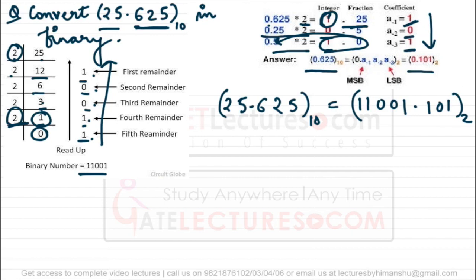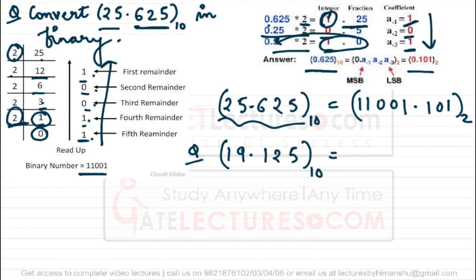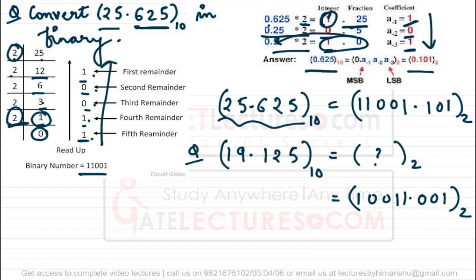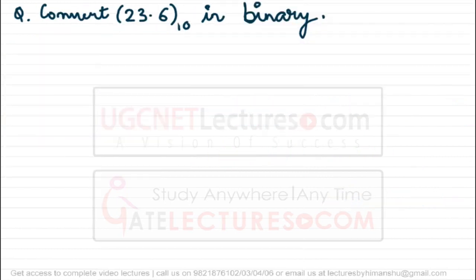Let us take one more question you can practice yourself. Convert 19.125 to binary. You must get the answer 10011.001. Try to convert this in binary and verify you get that answer.